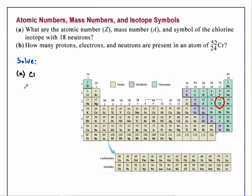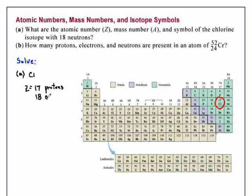So, for chlorine, Z is 17, which is the number of protons. The problem states that it has 18 neutrons, and the sum total of protons and neutrons is 35.